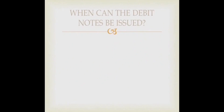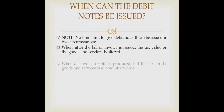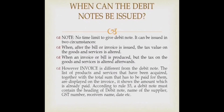There is no time limit to issue a debit note. It can be issued in two circumstances: one, when after the bill or invoice is issued; and two, when an invoice or bill is produced but the tax on the goods and services is altered thereafter. An invoice differs from a debit note — the invoice displays the list of products and services along with the total sum to be paid, and shows the amount already paid. According to Rule 53, a debit note must contain the heading 'debit note', name of the supplier, GST number, receiver's name, date, and other details.